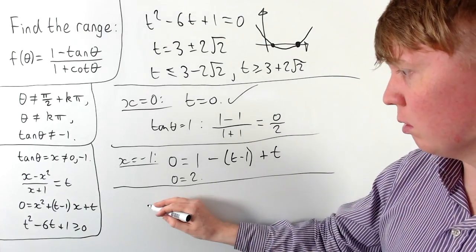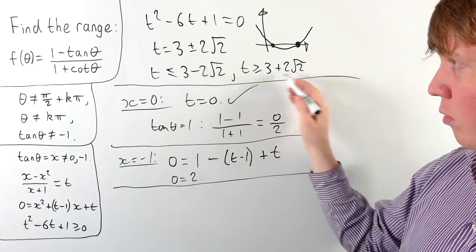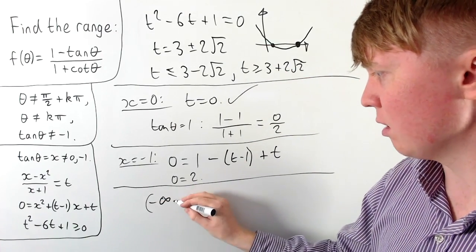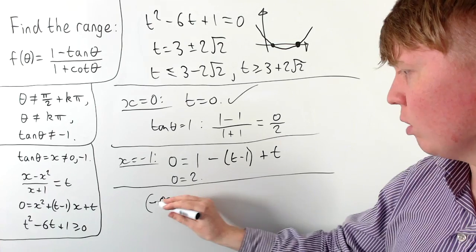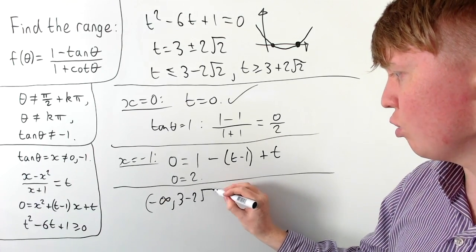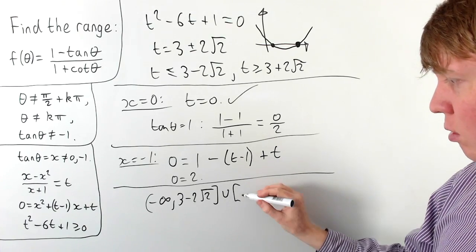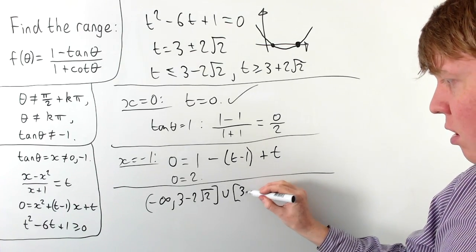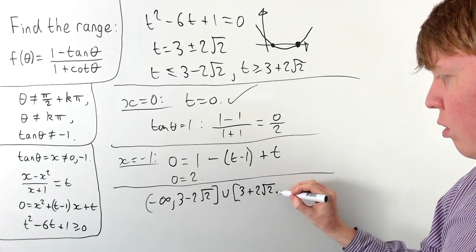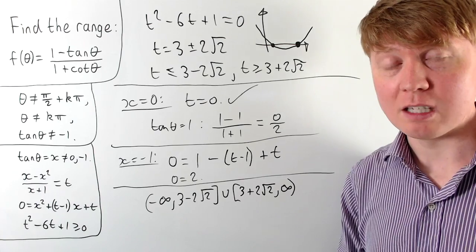So we can conclude that the range of our function is all values of t from the two intervals: t ≤ 3 - 2√2 or t ≥ 3 + 2√2. In set notation, this is (-∞, 3 - 2√2] ∪ [3 + 2√2, +∞). That is the range of our function.